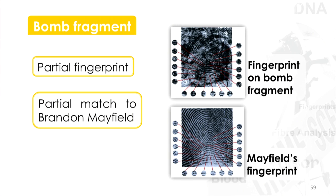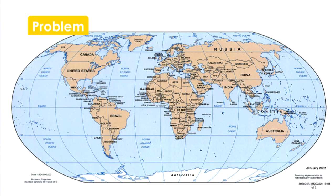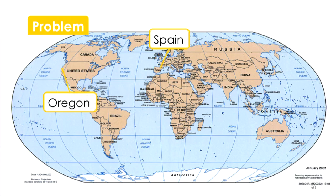However, there's an immediate problem with this, in that the bombs were planted in Spain and Mr. Mayfield lives in Oregon, which is an awfully long way away. And there was no actual evidence that Mr. Mayfield had traveled to Spain. But how did his fingerprint get on the bomb? And the answer is: it didn't.